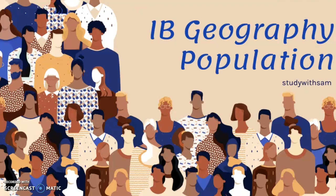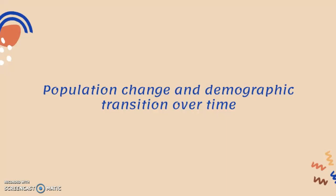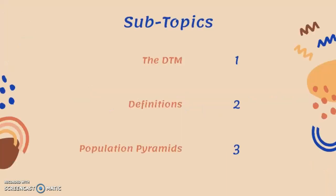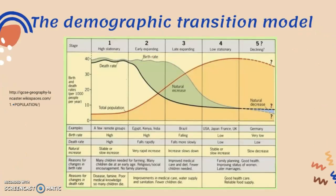This video is about population change and demographic transition over time. The subtopics in this part of the syllabus are the demographic transition model, some key definitions, and population pyramids. This is the demographic transition model, and the link at the side is where this diagram is from.